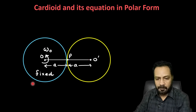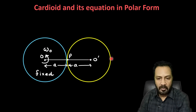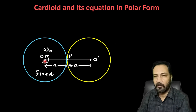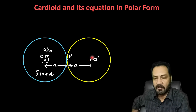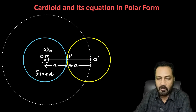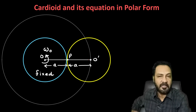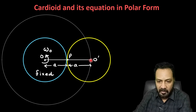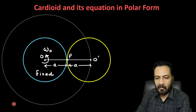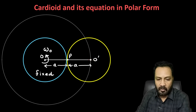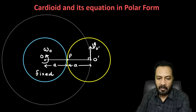This is the fixed circle and this is the rolling circle — both have the same radius a. O is the center of the fixed circle and O' is the center of the rolling circle. The trajectory of O' is a circle of radius 2a centered at O. The point O' rotates with some angular velocity omega_o, so the velocity of O' is v_O' = omega_o × 2a.